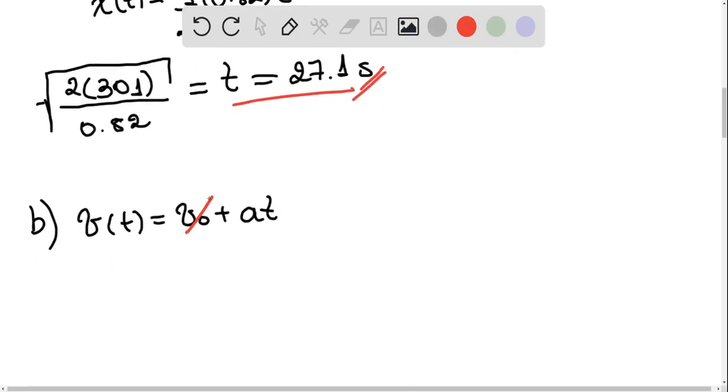So we know that in our case, the initial velocity is 0. We have that V of t is going to be 0.82 meters per second squared times the time. So since we want to find the velocity when it reaches the end of the road, we want to find the velocity at the time of 27.1 seconds. So it's this times 27.1, which is going to give us a velocity of 22.22 meters per second.